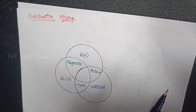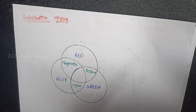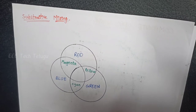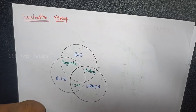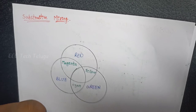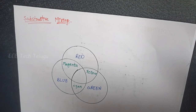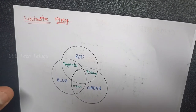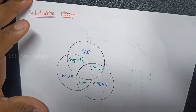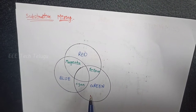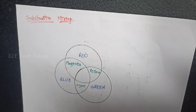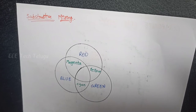For example, we will discuss in the picture. We take an apple which is red in color. Red color is actually made of three primary colors: Red, Blue, and Green. These are the primary colors — there are no other universal colors.